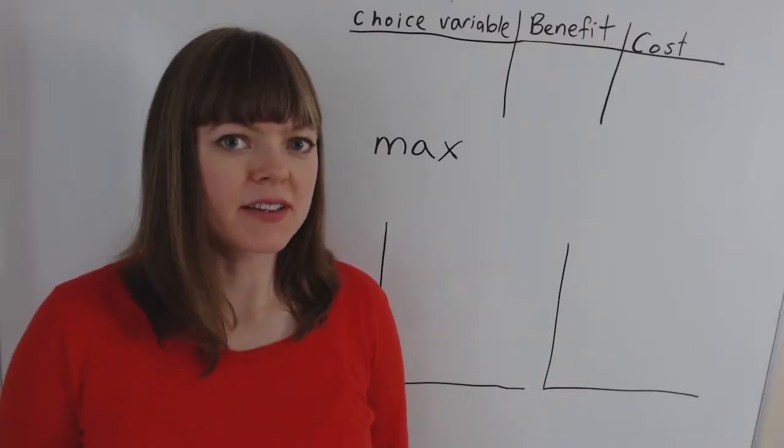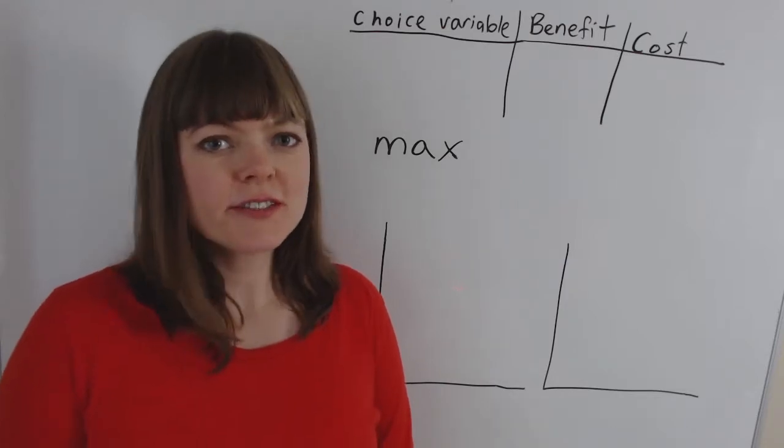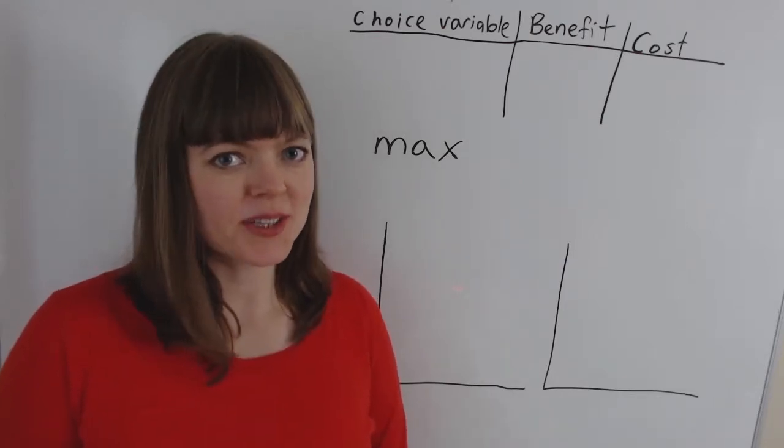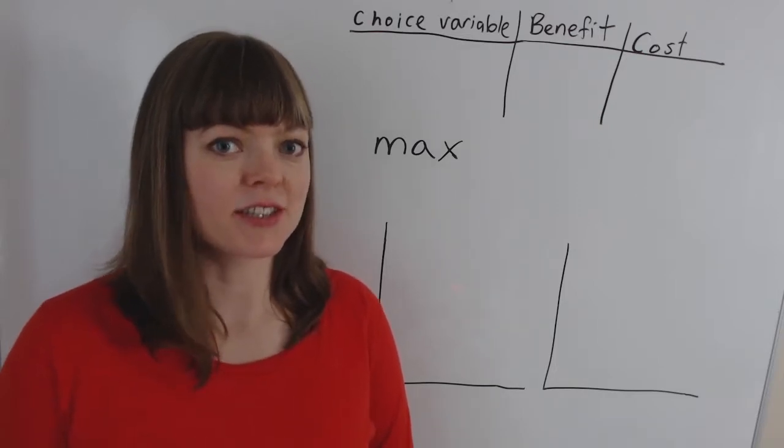The best way to learn microeconomic modeling is just to see a bunch of models and watch how they're structured. So this video goes over Fred and George Weasley's decision about how many people to test their puking pasties on.